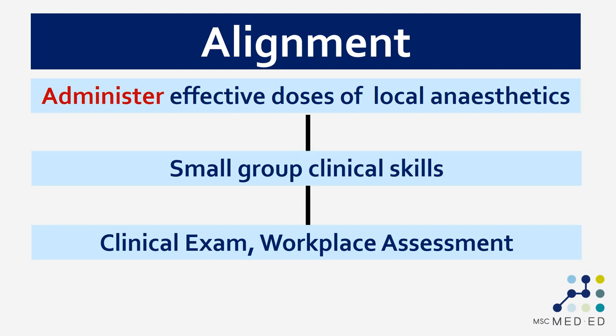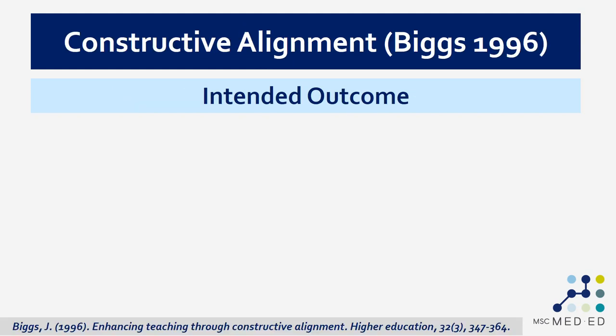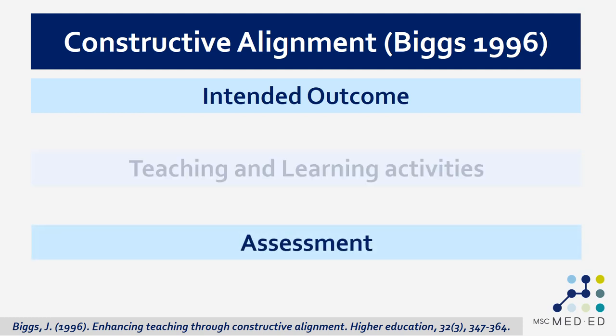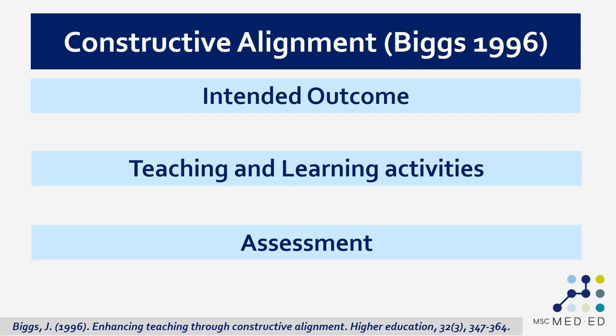Again, the outcome is aligned with the assessment and the learning and teaching activity. This principle is known as constructive alignment, written about by John Biggs back in 1996. As part of planning and teaching learning activities, make sure your outcome is aligned with your assessment, and that helps identify the teaching and learning activities that fit in between.